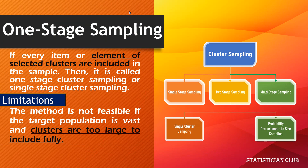Cluster sampling is divided into three categories: single-stage sampling, two-stage sampling, and multi-stage sampling. Two-stage sampling is further categorized into single cluster sampling and probability proportionate to size sampling. In this video we cover these three main types.